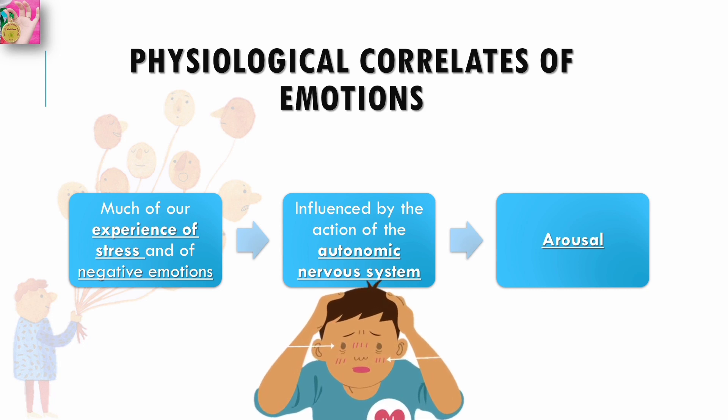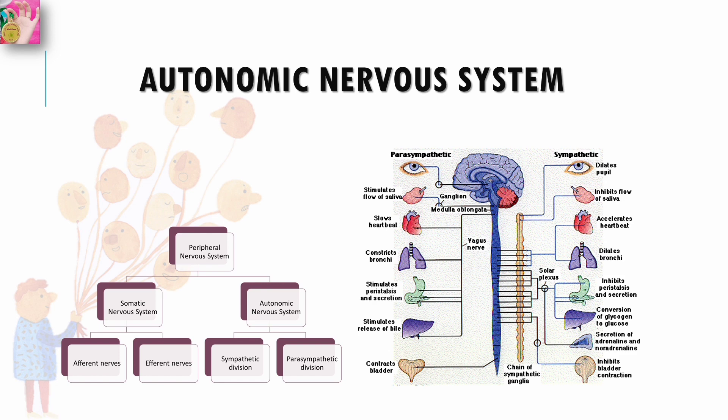Regarding the autonomic nervous system — I have also uploaded a separate detailed video on it, and a separate playlist on the nervous system is present in the playlist section. You can watch those videos to enhance your knowledge. In this video, we will study how the physiological correlates of emotion occur in the nervous system of the human body.